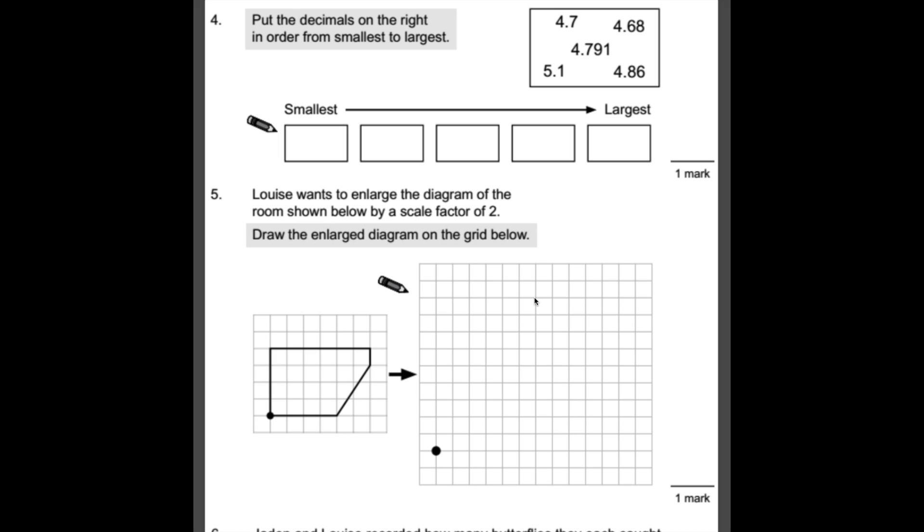Number 4, put the decimals on the right in order from smallest to largest. So the largest is the most obvious one, that's 5.1. All the rest are 4 point something. So looking at the smallest one, if you look at the tenths column here, that's the one after the decimal point. That's a 7, that's a 7, that's an 8, but that's a 6. So that one's going to be our smallest, 4.68. Probably a good idea to cross these off as you go so you don't miss any out or put any twice. The next biggest one would be 4.7 because that's 4.7 and nothing, whereas this one's 4.7 and a bit extra. So 4.7 is the next one. This would be the next one then, 4.791. And lastly then, 4.86 is our remaining one. And we've got all of them, so we know that that's right.